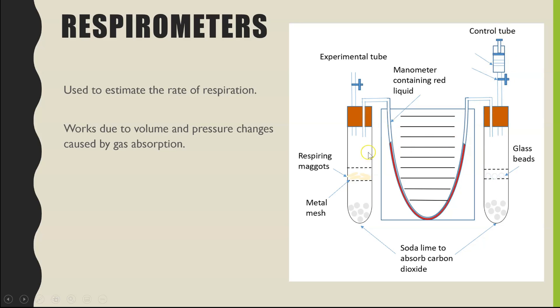Our experimental tube will have a living organism within it that will respire. Now I'm using maggots as the example today, but just as likely you could do this experiment with wood lice or sometimes with plants, in particular peas is a common example - fresh peas which should still be respiring.